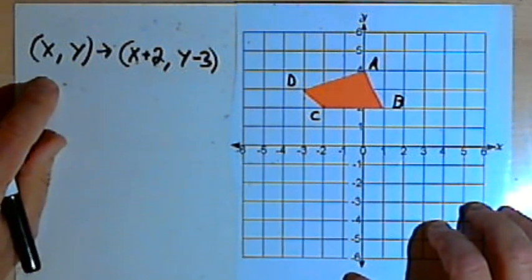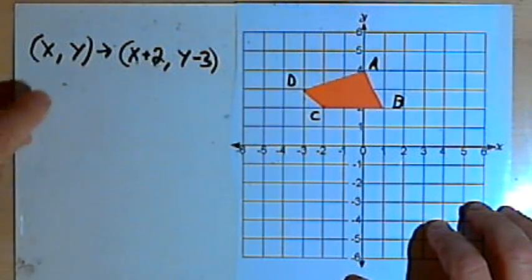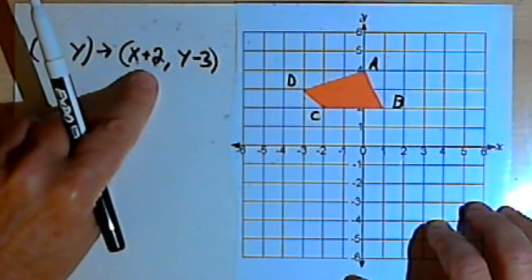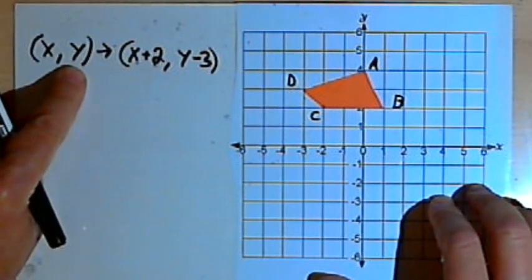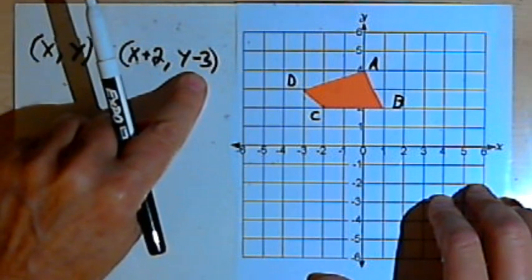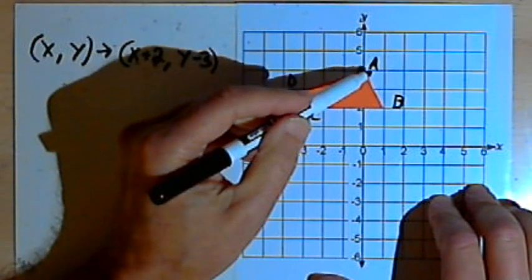What it tells me is this. For each of the points on the image, I'm going to take the x-coordinate and I'm going to add 2 to it. And for each of those points I'm going to take the y-coordinate and I'll subtract 3 from it. So to show you how it works, let's get started with point A.